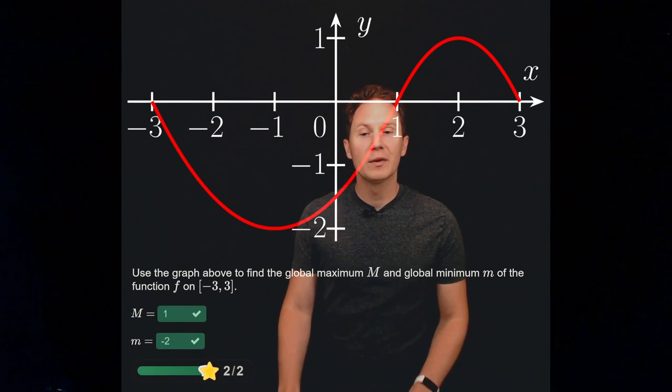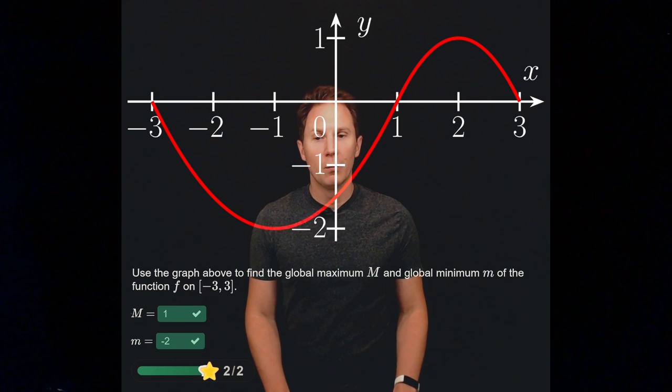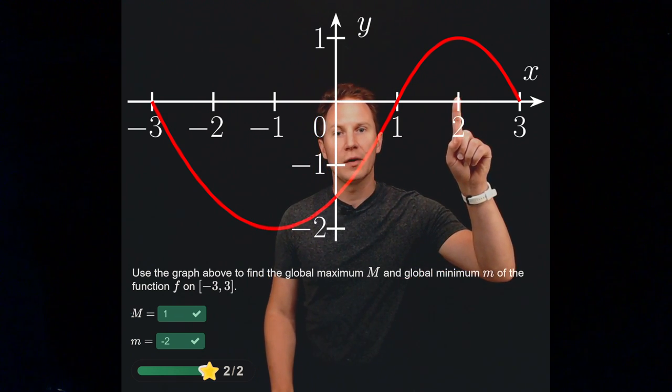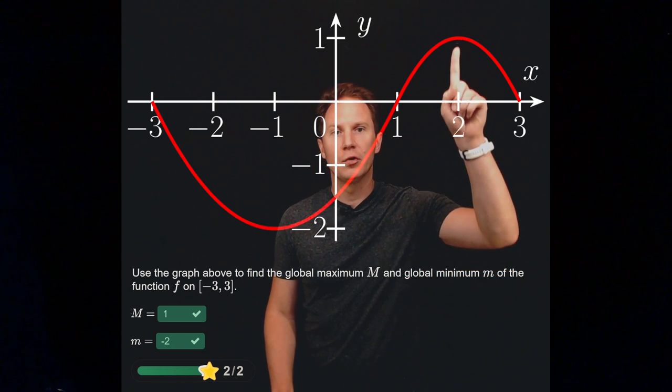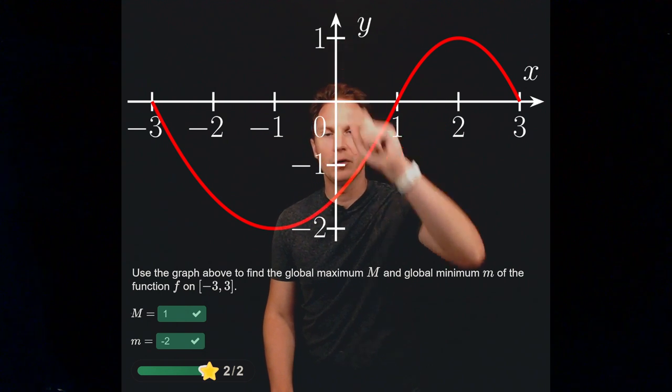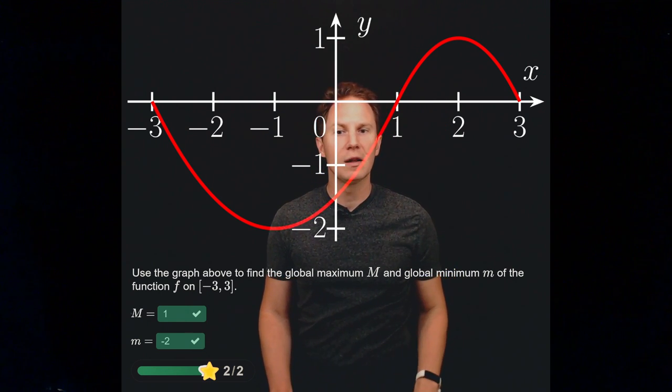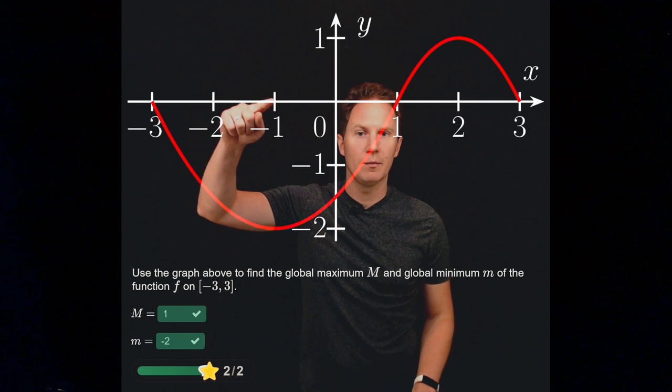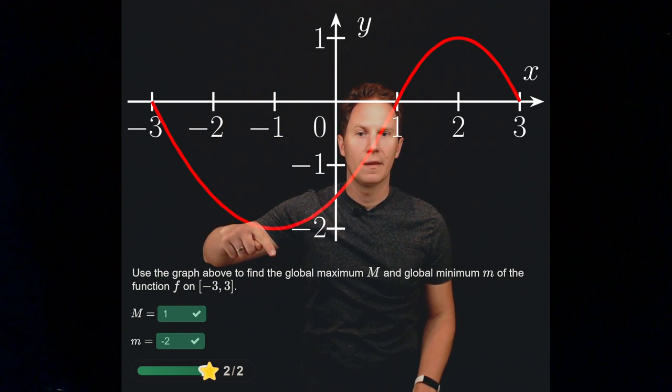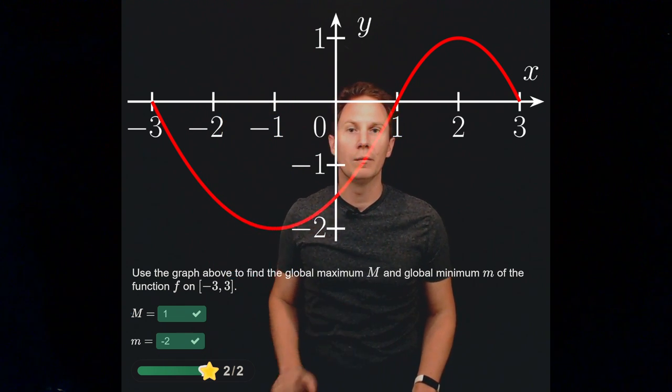Hope you paused it and have inputted for the global maximum 1. You can see the function attains at x equals 2, the global maximum value is 1, whereas the global minimum little m is negative 2 and this seems to be attained by the function at x equals negative 1. That's the global minimum.